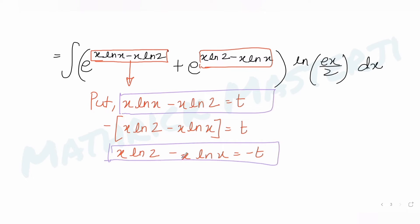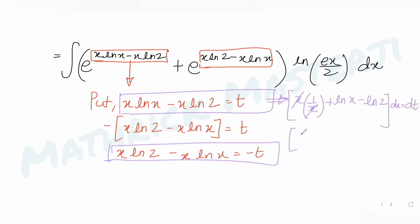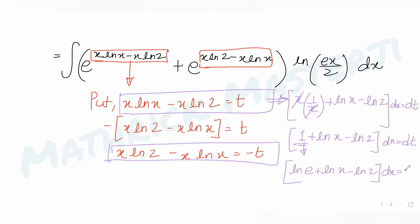Differentiating t = x·log x − x·log 2 with respect to x: d/dx gives x·(1/x) + log x·1 − log 2, which simplifies to 1 + log x − log 2. Writing 1 as log e to the base e, this becomes log e + log x − log 2, so log(ex) − log 2 = log(ex/2). Thus log(ex/2) dx = dt.